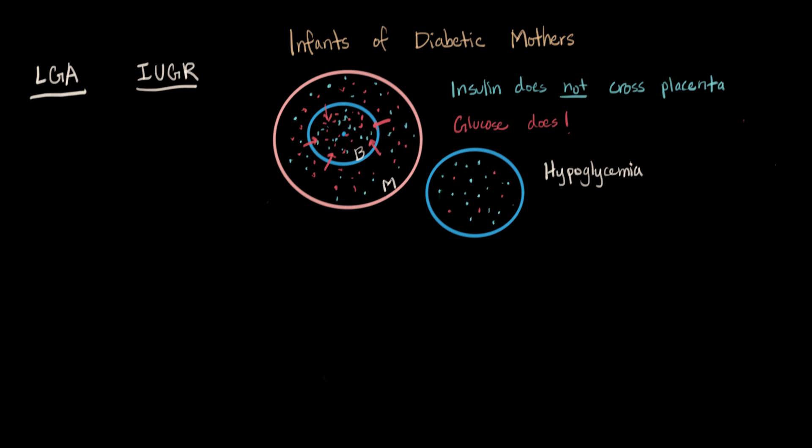So when we have an infant of a diabetic mother, we need to monitor their glucose very closely, and we would like to keep it above 45. Below 45 is gonna be dangerously low, so they should be fed and given extra glucose according to this range.